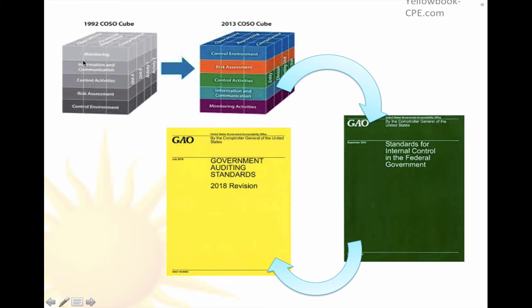A little bit of history here. The 1992 COSO model — the COSO cube — did not have 17 principles. In 2013, they added more granularity, kind of reorganized the document, made it easier to work with. The GAO, in 2014, published this book, which is called Standards for Internal Control in the Federal Government.